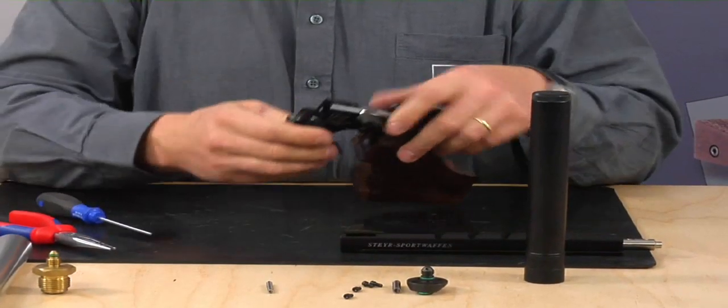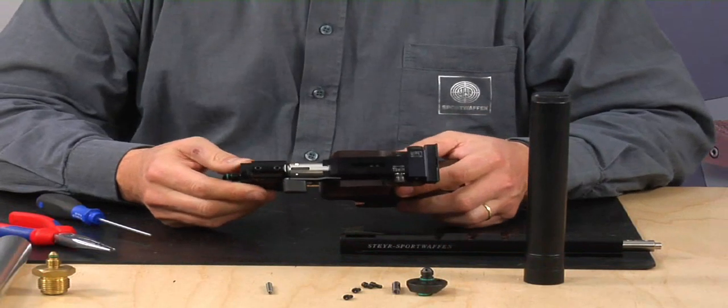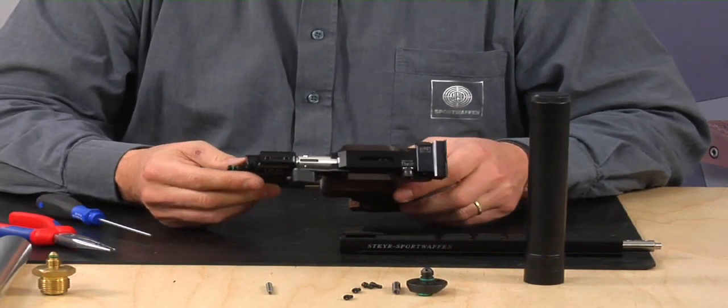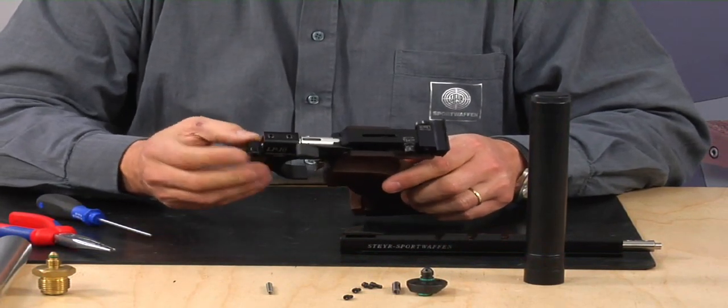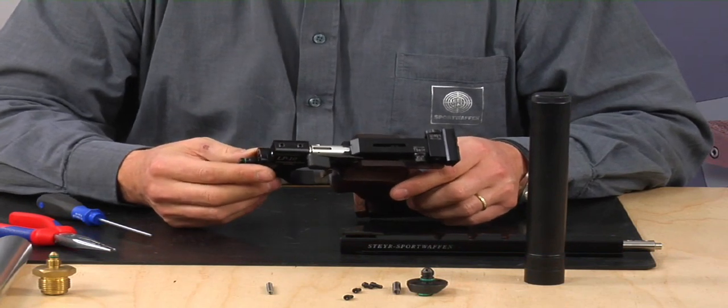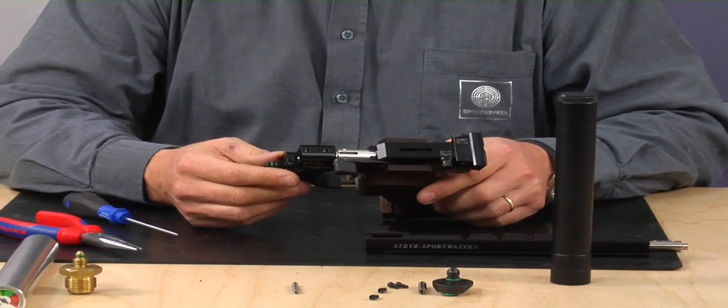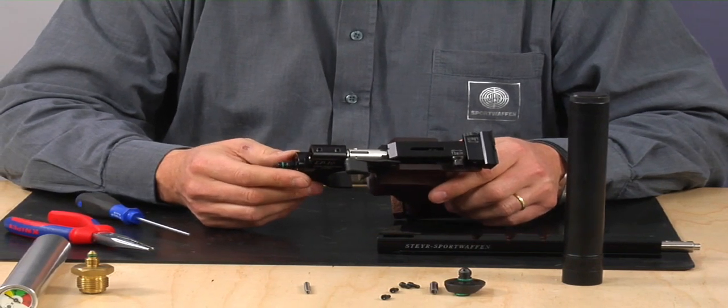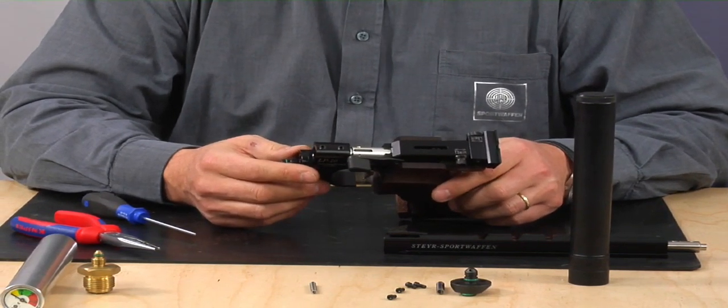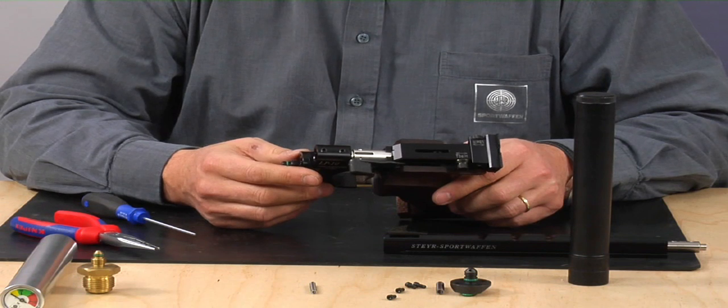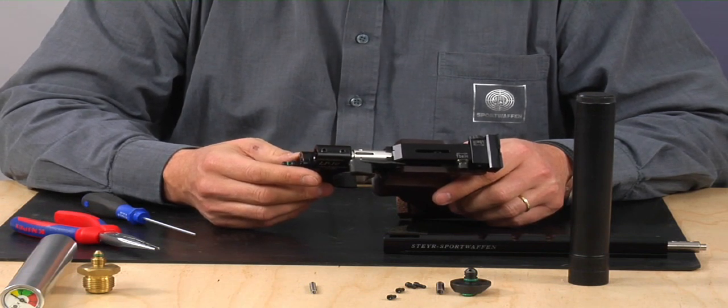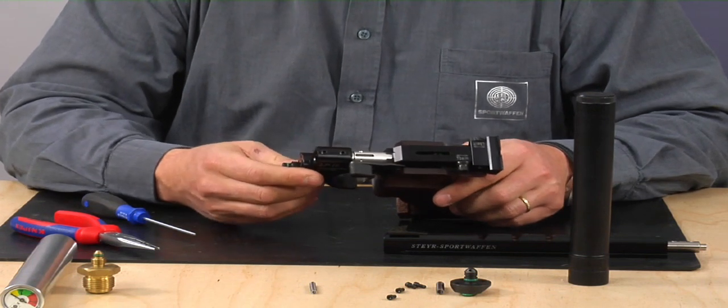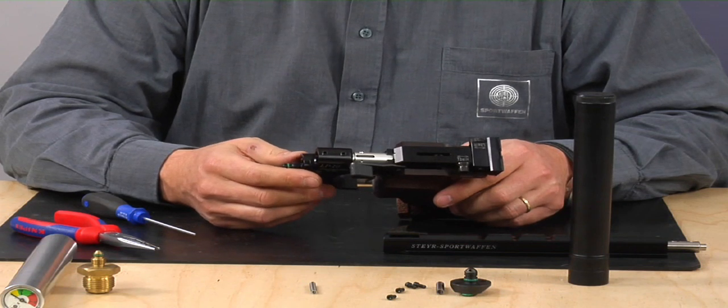The pressure reducing valve is the same for the LP1, LP10 and LP2 models. So there is no difference. Nevertheless, I want to highlight that we are only talking about the conversion of a one shot pistol. Should you wish to convert an LP5, a five shot air pistol, from CO2 to compressed air, this is only possible by returning it to our workshop in Austria.